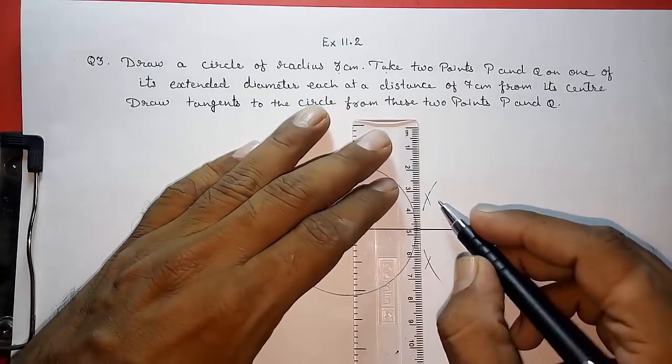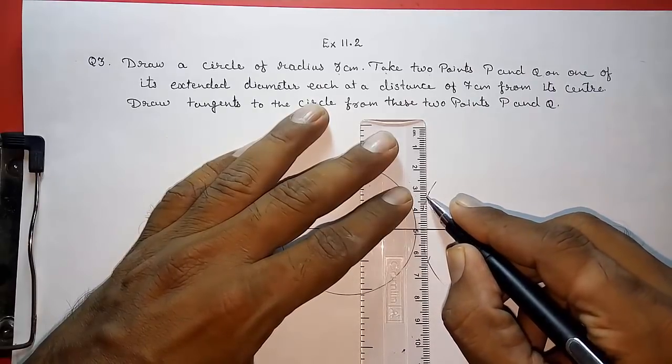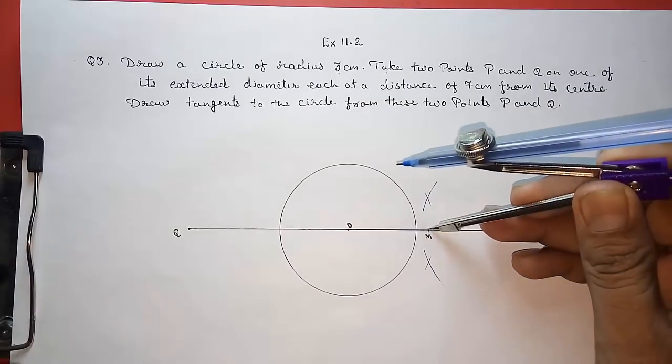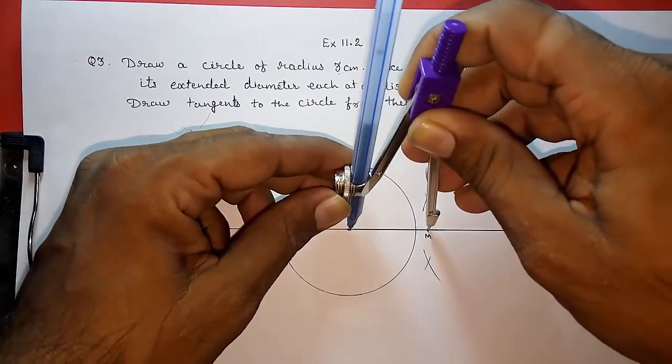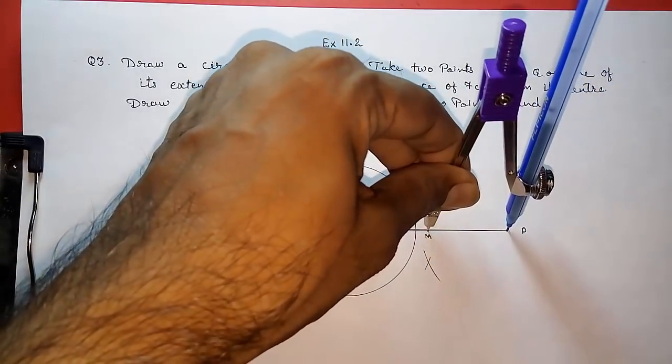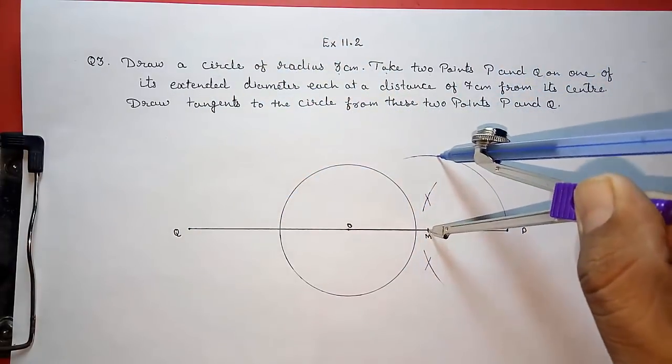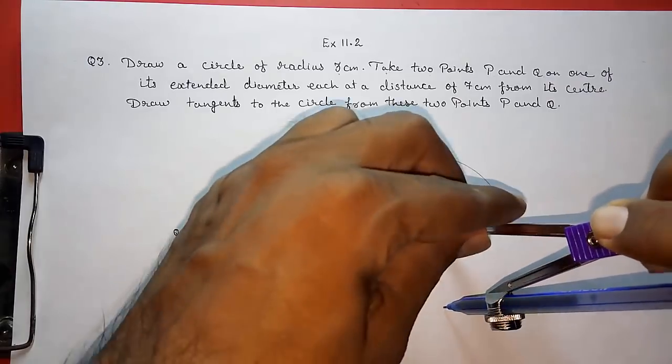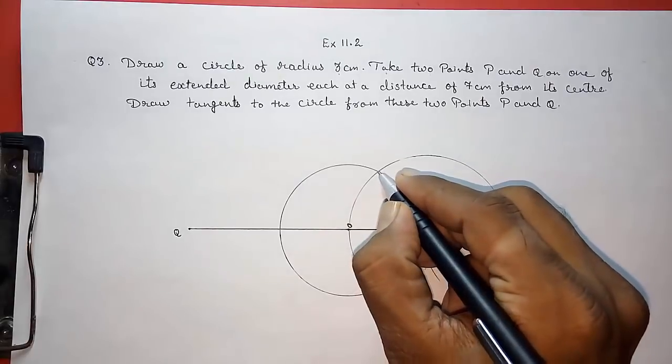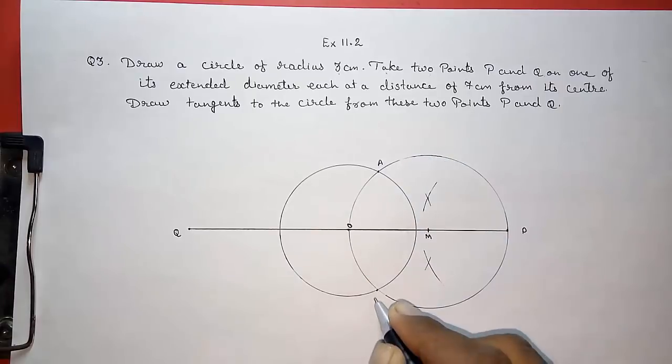So here I will get midpoint M. Okay this will be our midpoint M. Now we will draw a circle taking OM as the radius. You can see here also it should intersect here. Yes it is intersect. So I am drawing a circle. Okay where it is intersecting at our previous circle, give this that point name A and B.